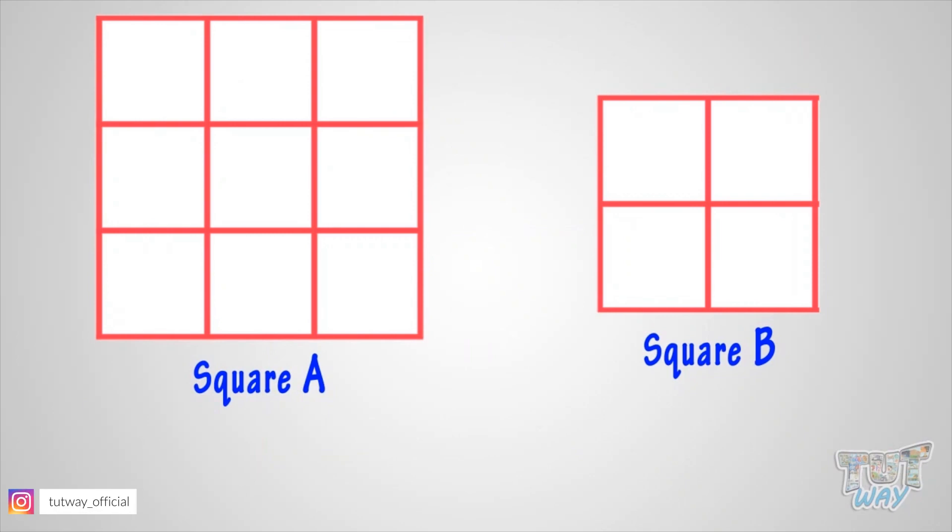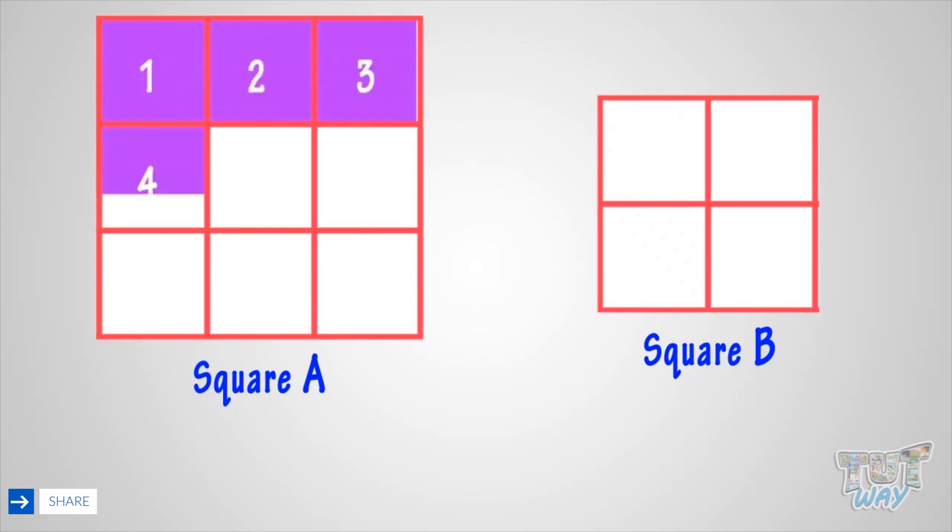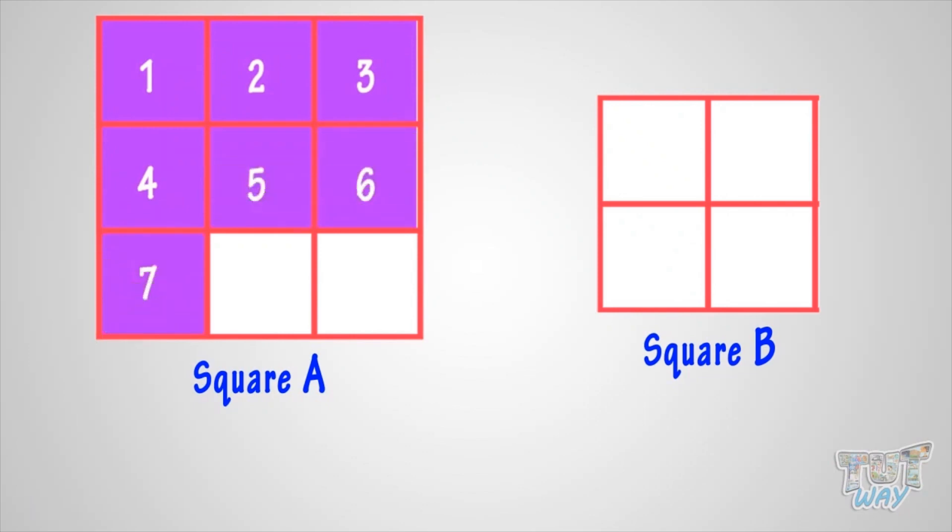So you can count 1, 2, 3, 4, 5, 6, 7, 8, 9. And say area of square A is equal to 9 small squares.